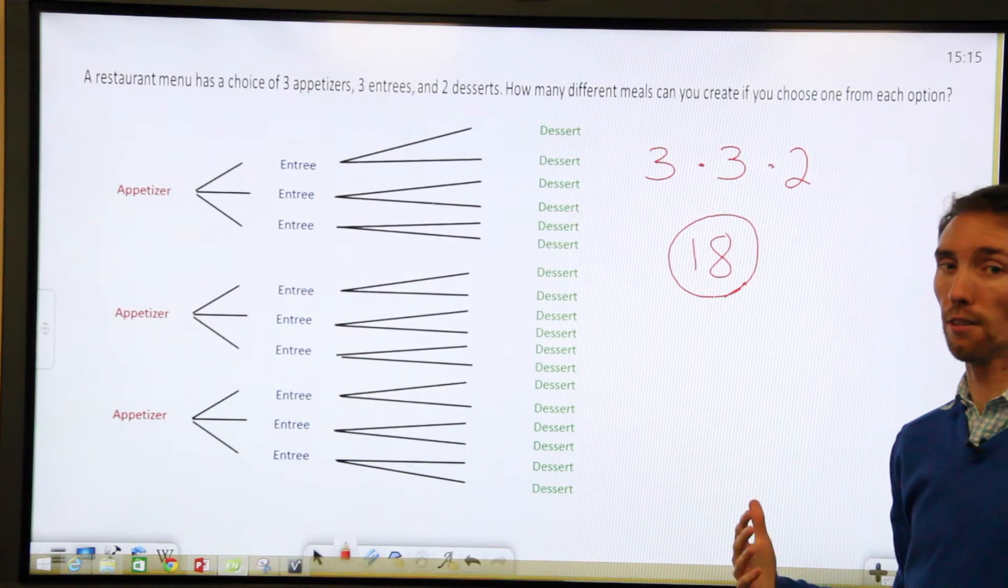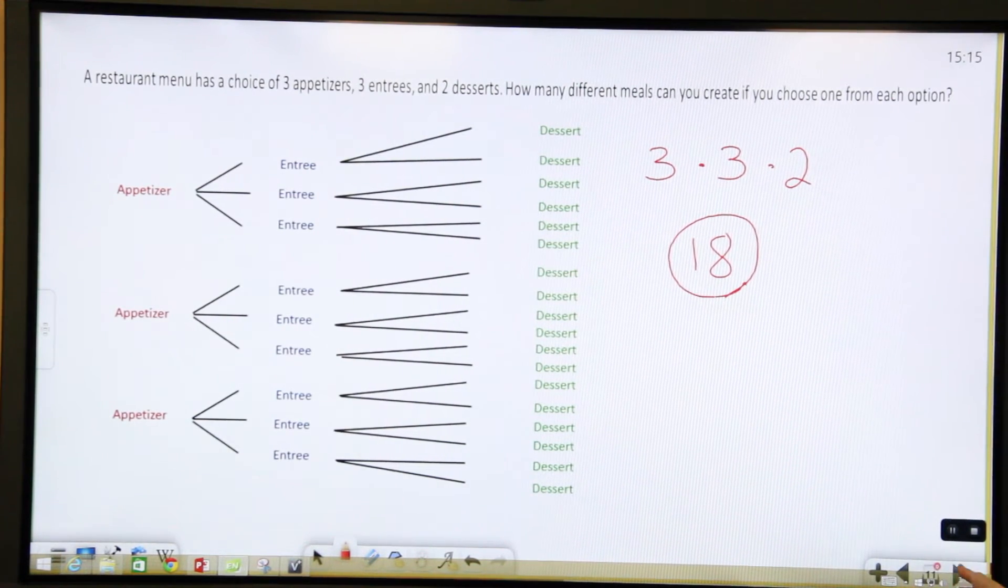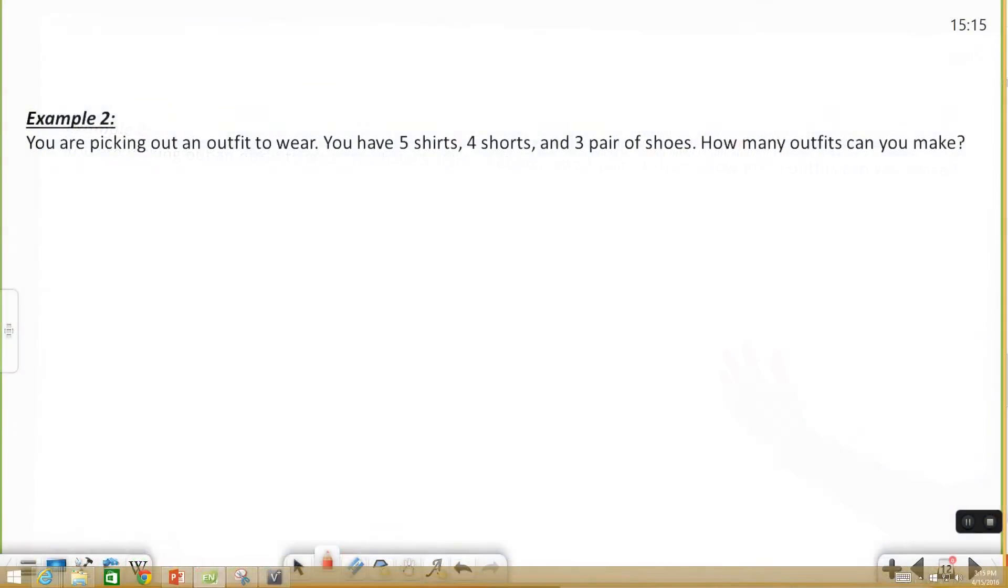So let's try another example using our fundamental principle. Let's say you're picking an outfit to wear and in your closet you have five different shirts, four pairs of shorts, and three pairs of shoes. You want to figure out how many different outfits can I possibly put together.